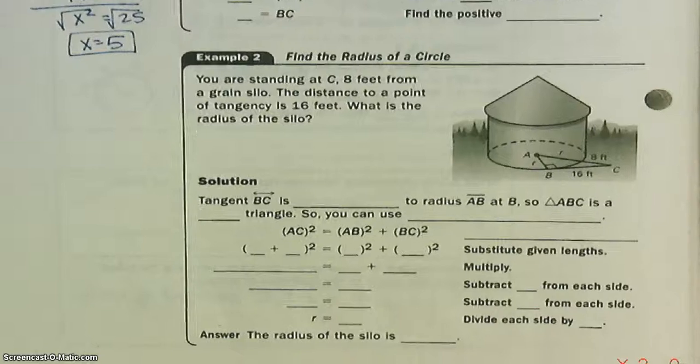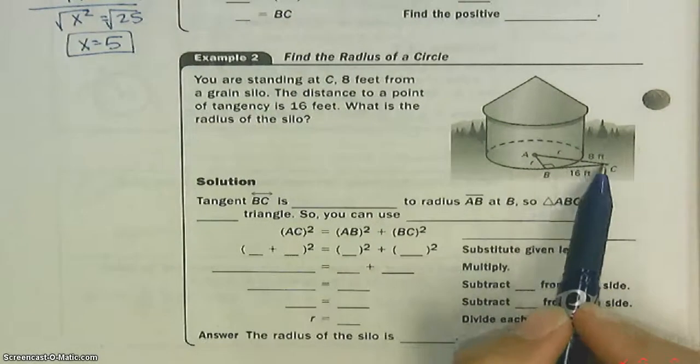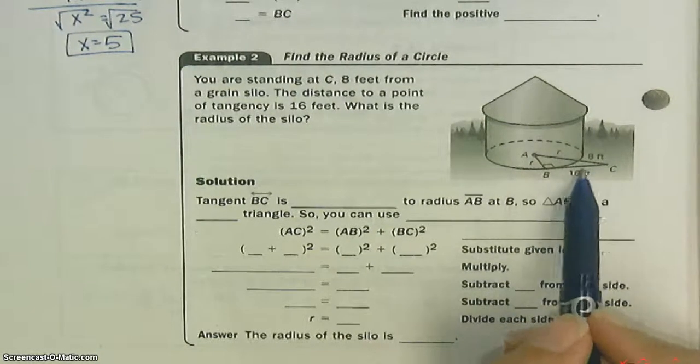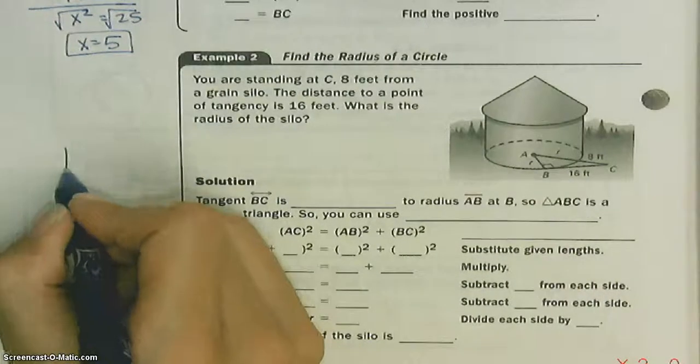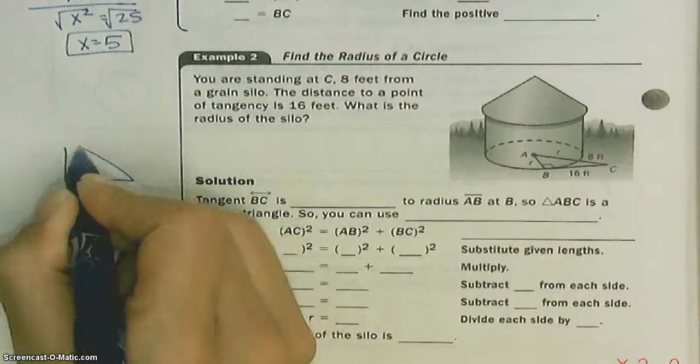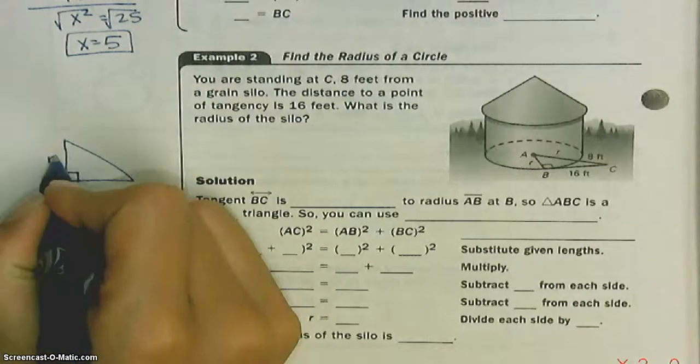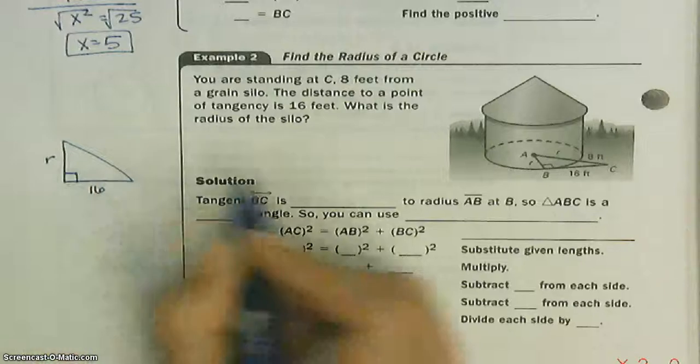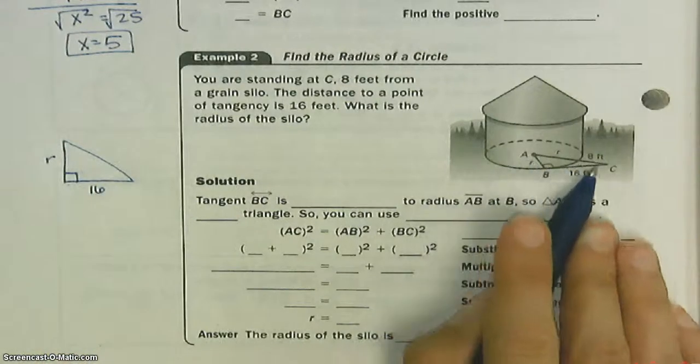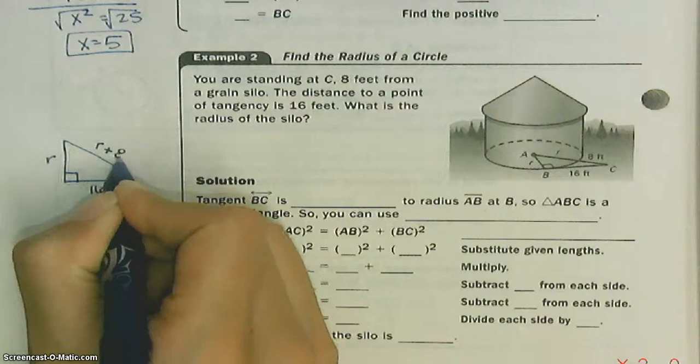Example 2: We have a very similar example here. You're standing at C, which is 8 feet from a grain silo. The distance to a point of tangency is 16. What's the radius? Let's draw this triangle. This is R. This is 16. How long is this? This is R and 8, so we're going to call this R plus 8.